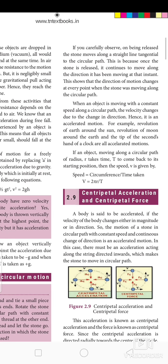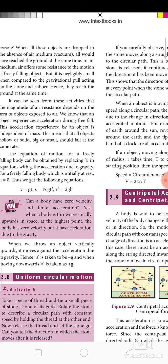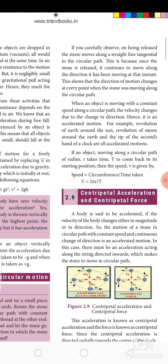If you throw an object upward, instead of G you substitute −G, since gravity acts opposite to the direction of motion. That is the small variation for upward projection.